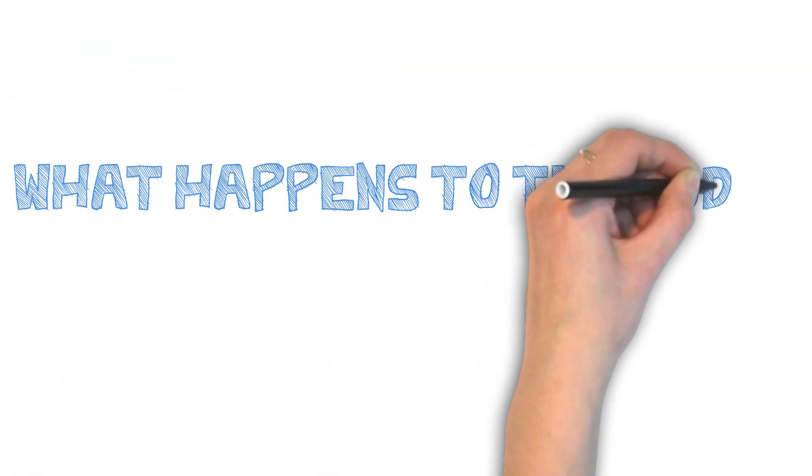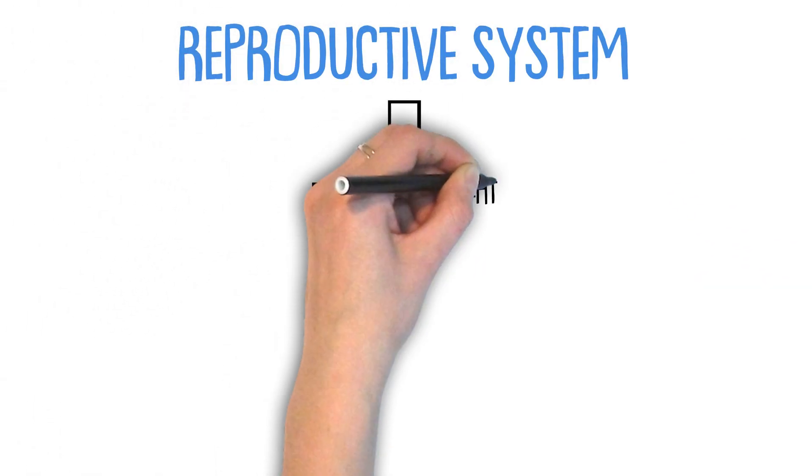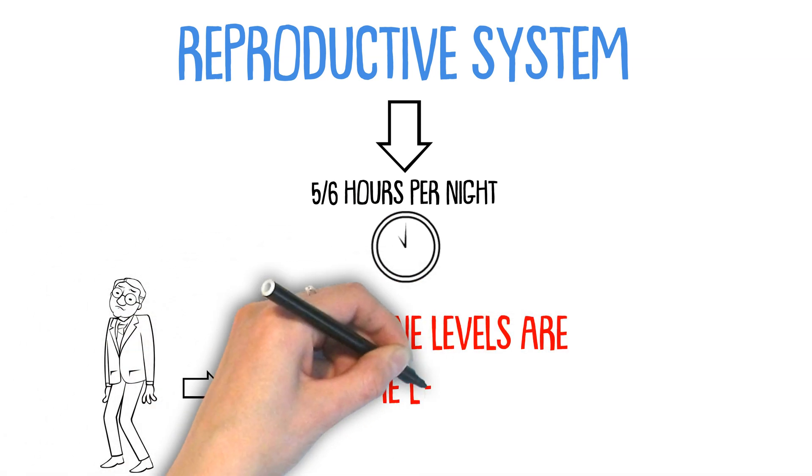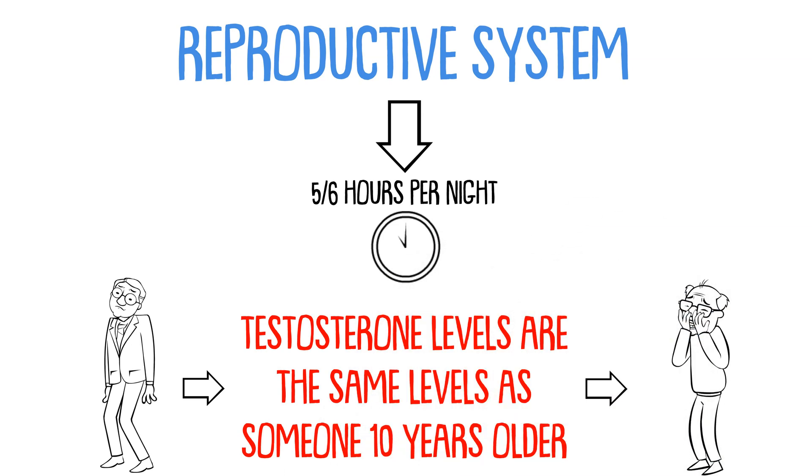What are the effects of sleep deprivation on the body? Firstly, sleep deprivation affects the reproductive system. Men who are sleeping just 5-6 hours a night have the same level of testosterone of someone 10 years older. So a lack of sleep will aid your virility and wellness about a decade quicker.